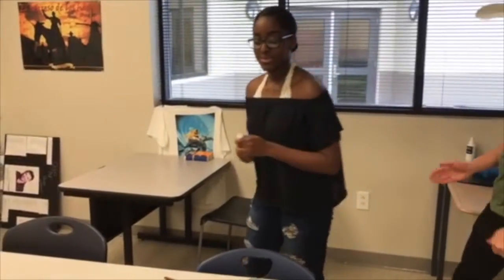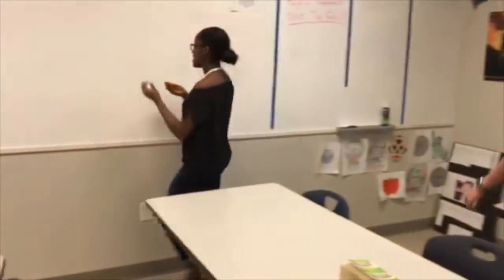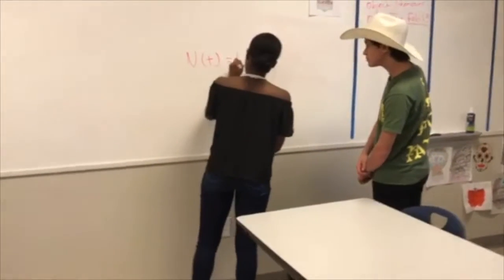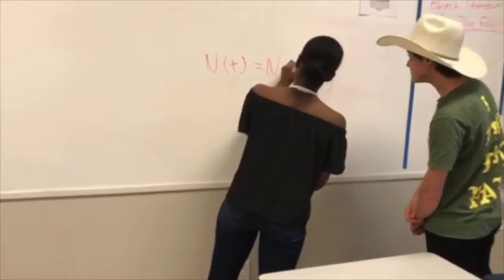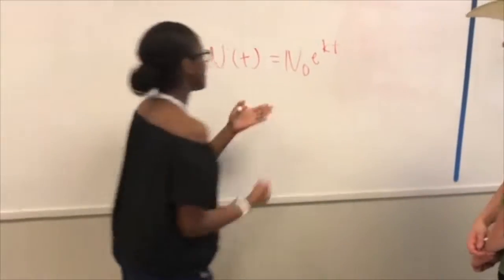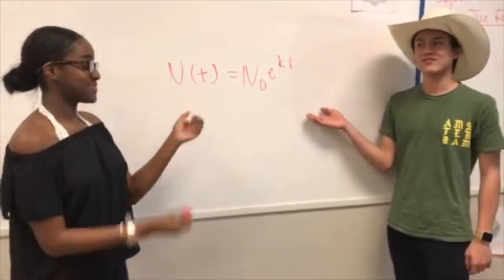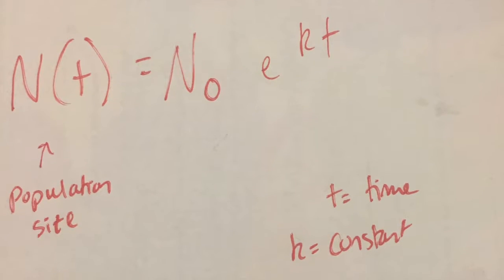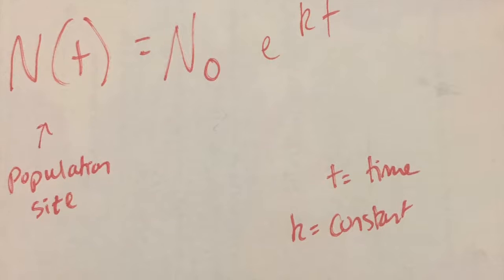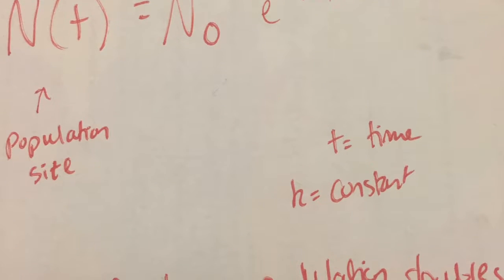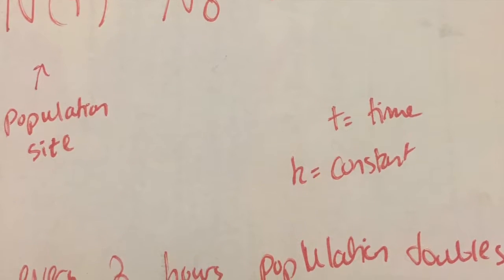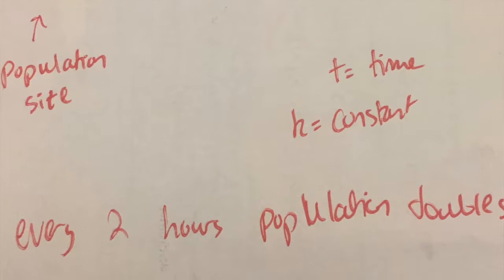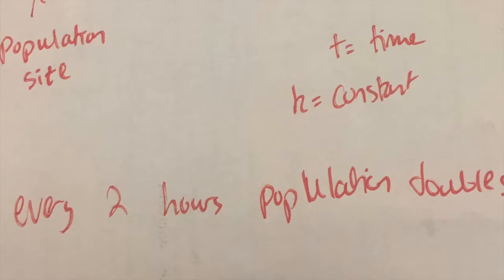She like, I know you're a general model. N times t equals N to the zero power times e to the kt. N times t is your y, or basically your population size. N to the zero times e to the kt is your y equals mx plus b. That's the equation you're multiplying by. T is the time and k equals the constant.